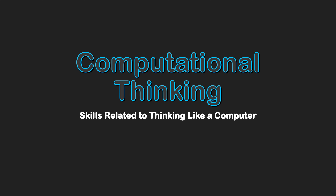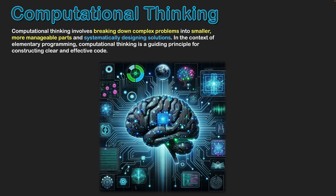Computational thinking — skills related to thinking like a computer. Computational thinking involves breaking down complex problems into smaller, more manageable parts and systematically designing solutions. In the context of elementary programming, computational thinking is a guiding principle of constructing clear and effective code.